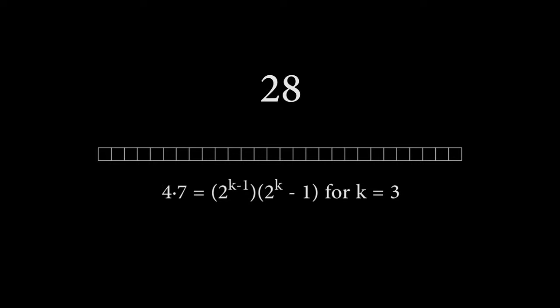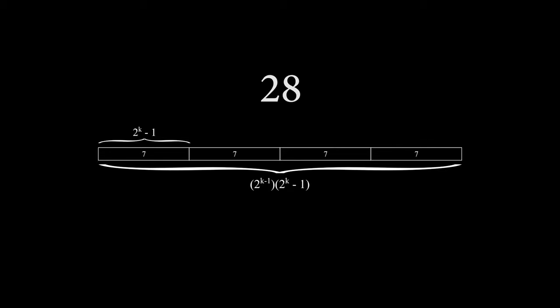When k is equal to 3, so let's partition our set of blocks into chunks, each of which have 2 to the k minus 1 blocks, which in this case is 7. Notice that we will get 2 to the k, 4 in this case, of these chunks.